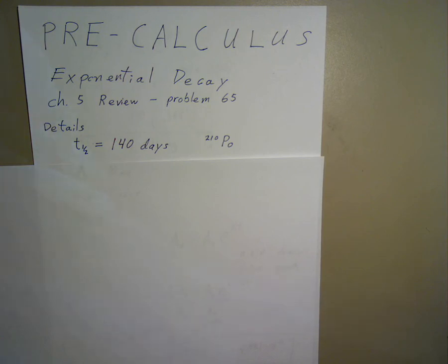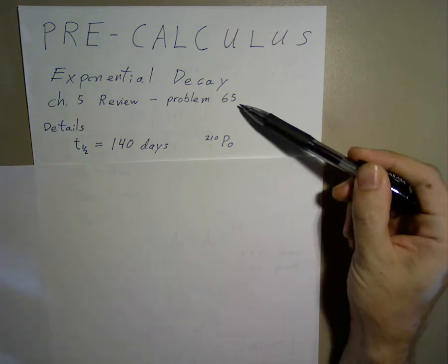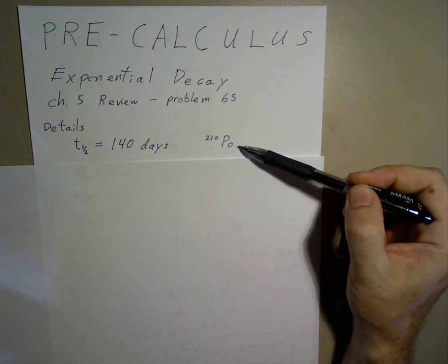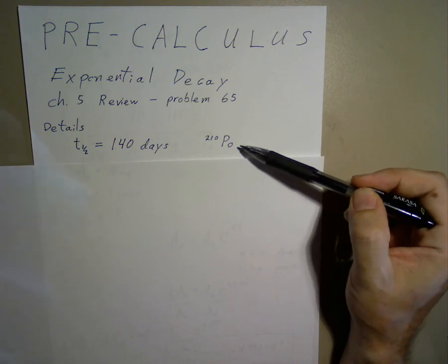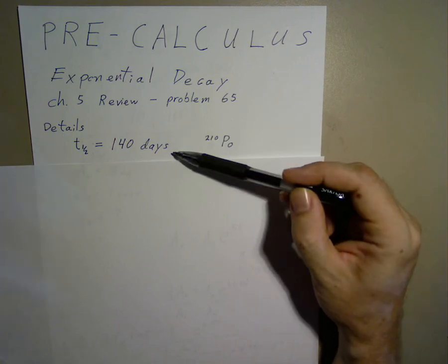In this case, we'll be looking at Chapter 5 in the review problems, problem number 65, looking at the decay of polonium-210, which has a half-life of 140 days.